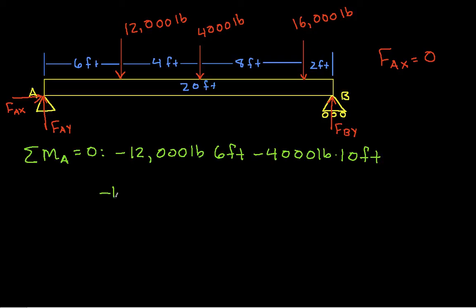Then we have minus 16,000 pounds acting with a moment arm of 18 feet. Finally, we have F_BY, which is positive because it's inducing a counterclockwise rotation, acting with a moment arm of 20 feet. These all sum to zero.